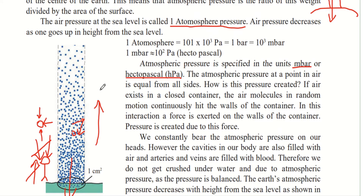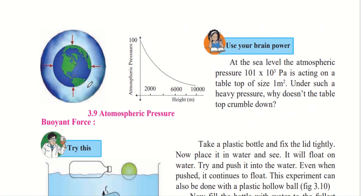As you go higher on the surface of the earth — when you climb mountains and hills — the pressure on top of those mountains is very low. Because of this, it sometimes becomes difficult to breathe, since the air particles at that level are fewer and oxygen is also less. Therefore, the atmospheric pressure is also decreased at higher altitudes.